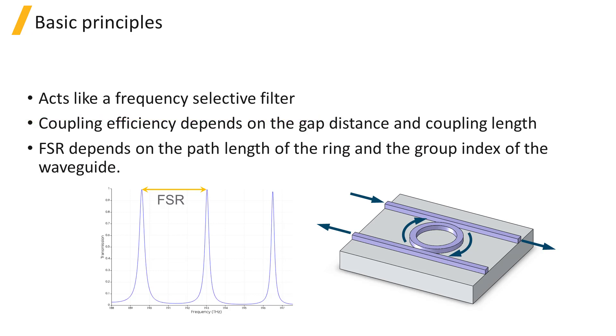The coupling efficiency between the straight waveguide and ring depends on the gap distance and coupling length. The free spectral range, or FSR, is the spacing between these frequencies. The FSR depends on the path length of the ring and the group index of the waveguide.